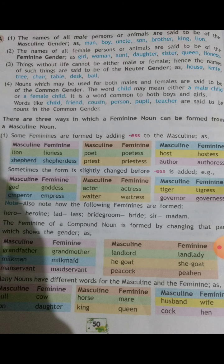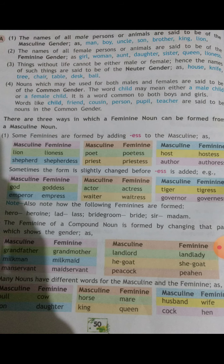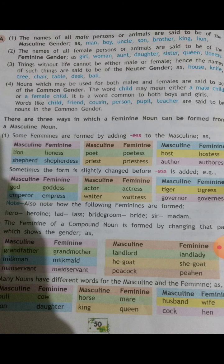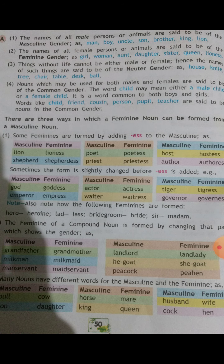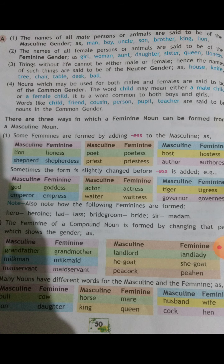First, let's look at an example: 'The boy plays football.' The noun 'boy' is the name of the male, so it is therefore said to be of the masculine gender. The word masculine means male, and so the names of all male persons or animals are said to be of the masculine gender. Such as man, boy, uncle, son, brother, king, lion, etc.